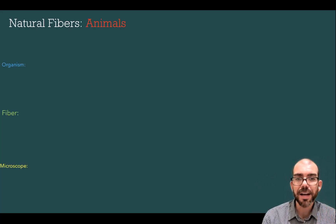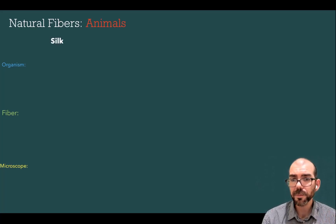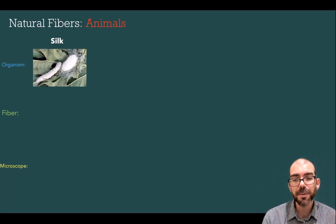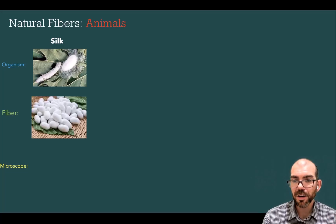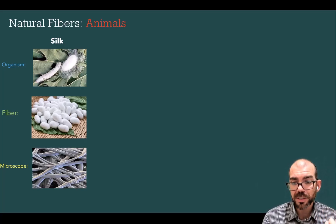Let's look at the different kinds of fibers, starting with natural fibers from animals. One example is silk. Silk comes from silkworms — when silkworms produce a cocoon, the fibers on that cocoon are spun and used to make silk products. Here you can see those silk cocoons and what the fiber looks like, and here's what it looks like under the microscope: really close, dense fibers with a somewhat smooth appearance.